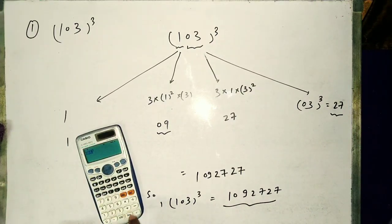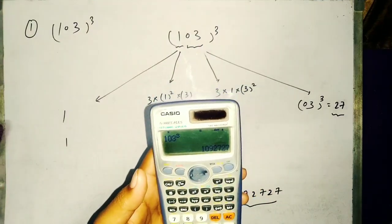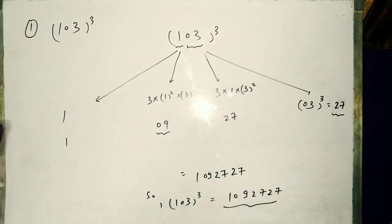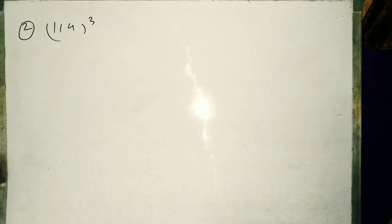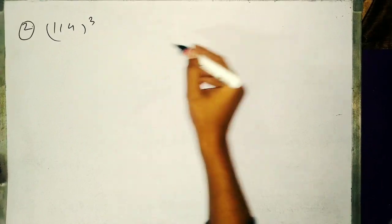Cube for 103 cube will be 1092727. You can cross check it with the calculator.